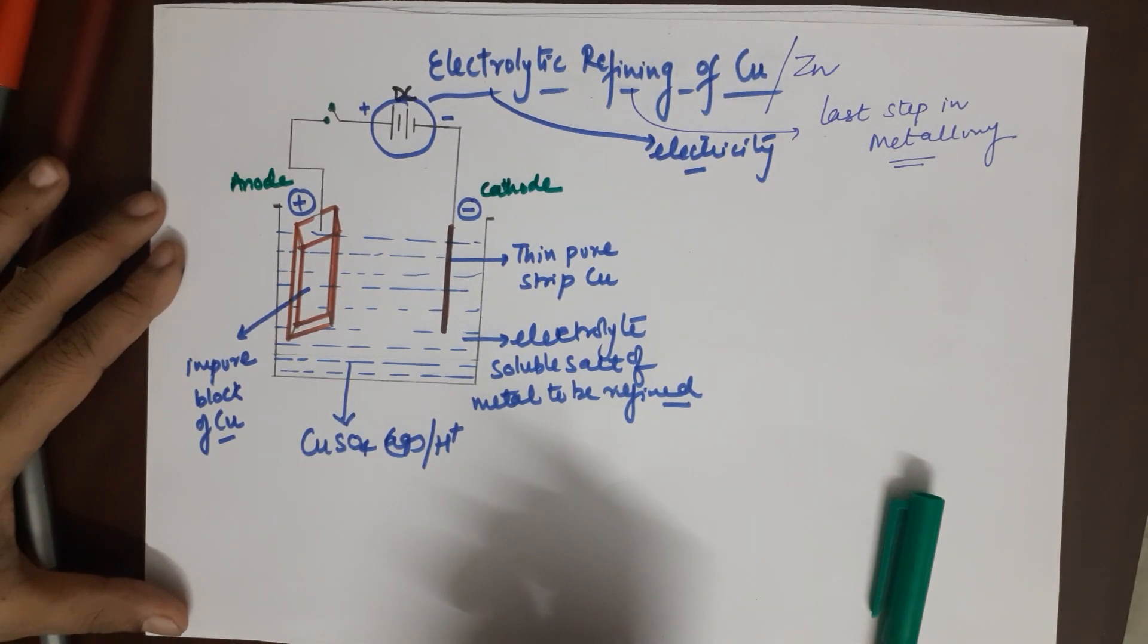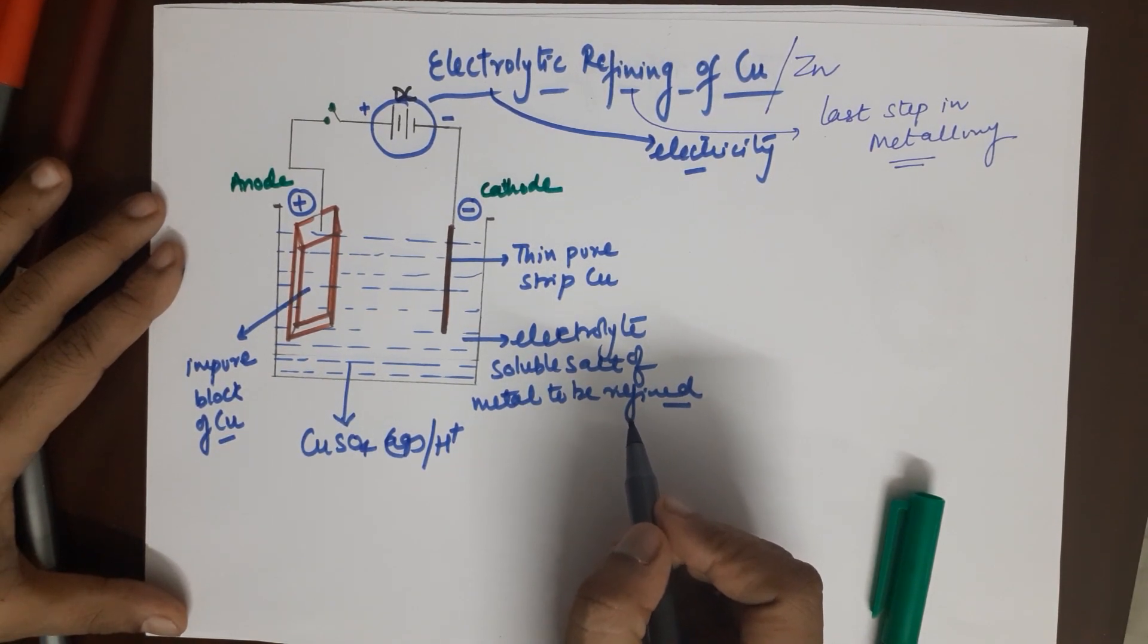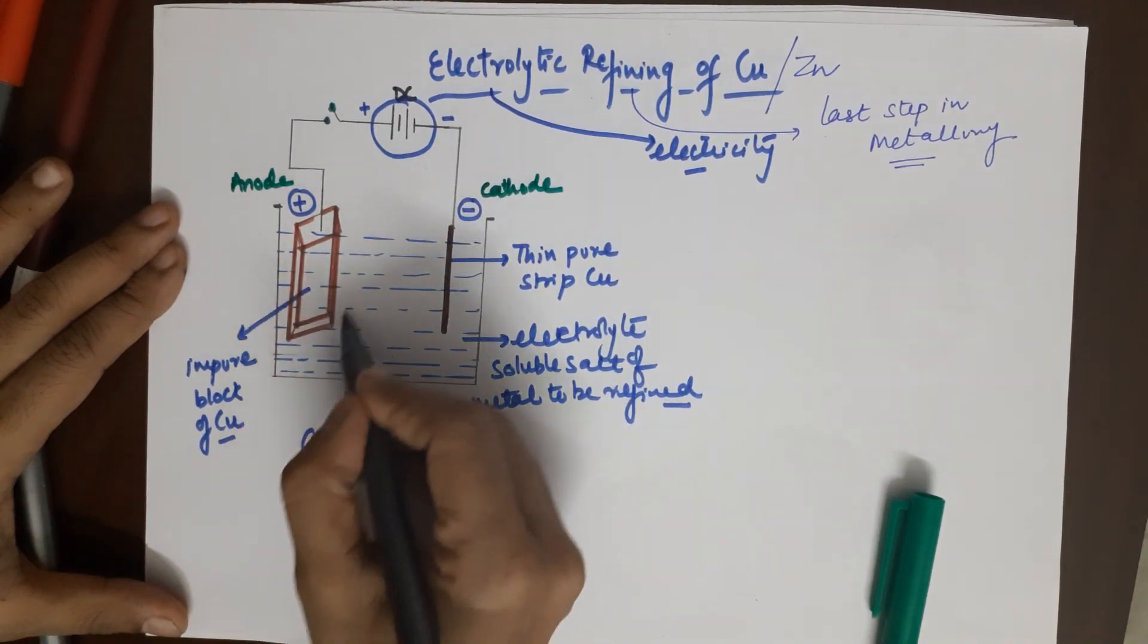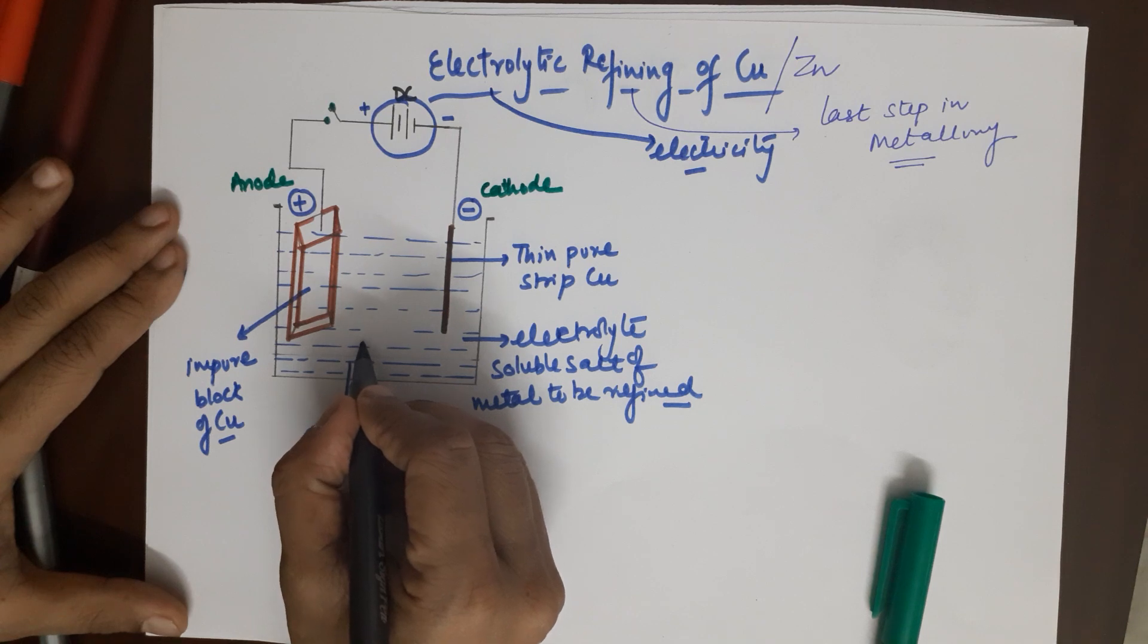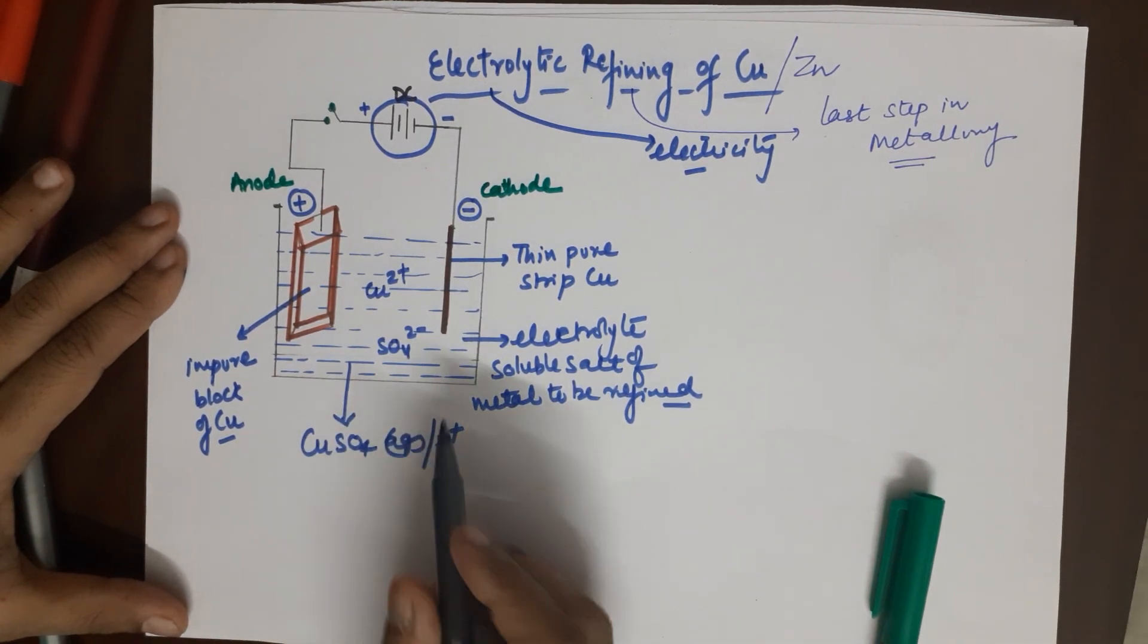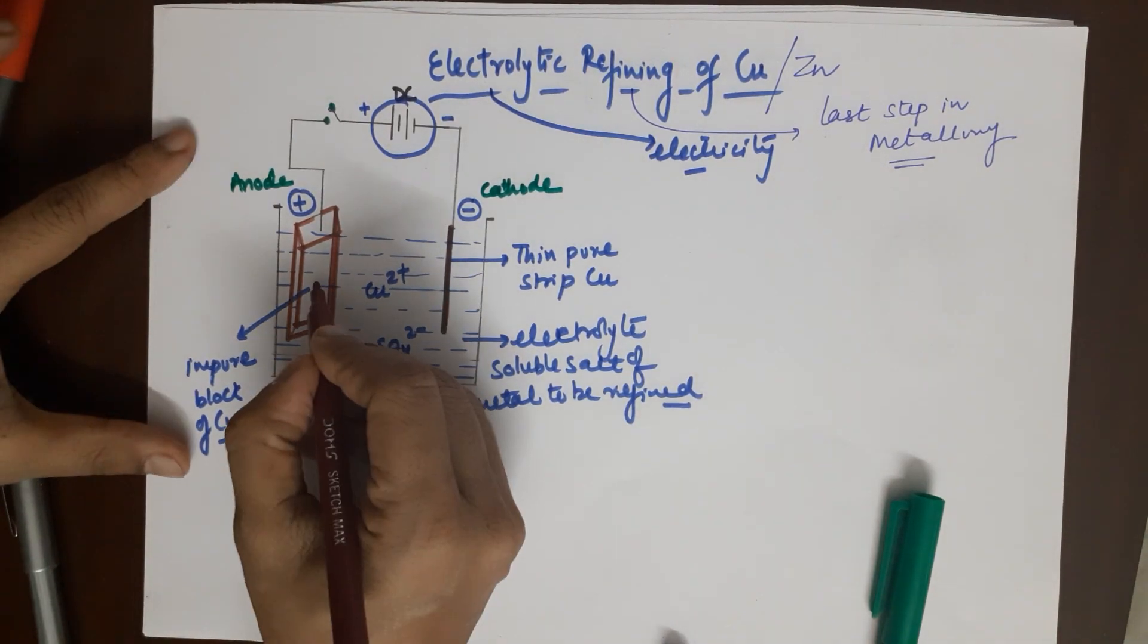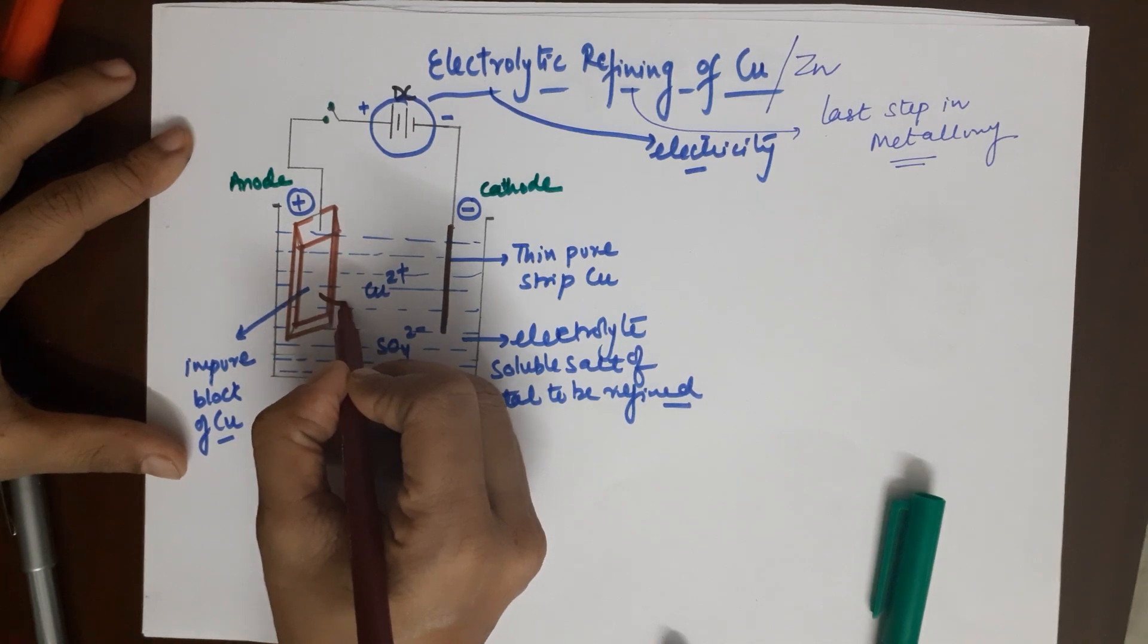When you begin with the process, what exactly happens? This is the positively charged terminal, this is the negatively charged terminal. In the impure block of copper and in the solution, you already have copper two positive ions and sulfate two minus ions from the electrolyte. When the reaction begins, from the impure block copper moves out as copper ions and goes into solution.